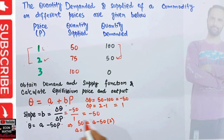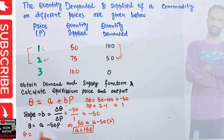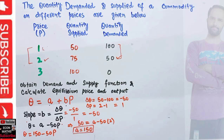So A will be equal to 50 plus 100, which comes out to be 150. Therefore, our demand function looks like this: Q is equal to 150 minus 50P. This is our quantity demanded function.